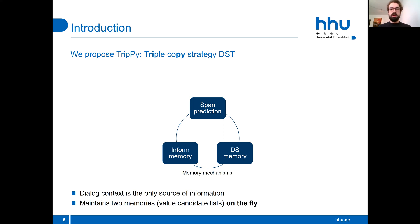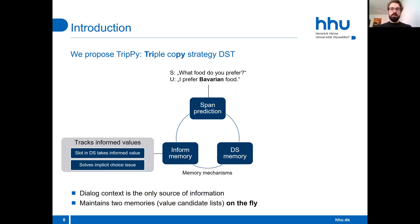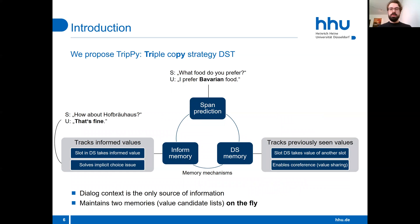TRIPY is a hybrid approach that avoids the scaling issues of other hybrid approaches. Our model relies on span-prediction to extract values directly from user input whenever possible. In addition, two copy mechanisms can copy values from memories that are maintained on the fly. TRIPY does not use any predefined picklists and uses the dialogue context as the only source of information. The model decides for every slot which copy mechanism to use. The informed memory tracks values that were informed by the system; if the model predicts that a value was informed, then the value is copied from the informed memory, which solves the implicit choice issue. The dialogue state memory tracks previously seen values; if the model predicts that a value was previously assigned to another slot, then the value is copied from the dialogue state memory, which solves the coreference or value sharing issue.